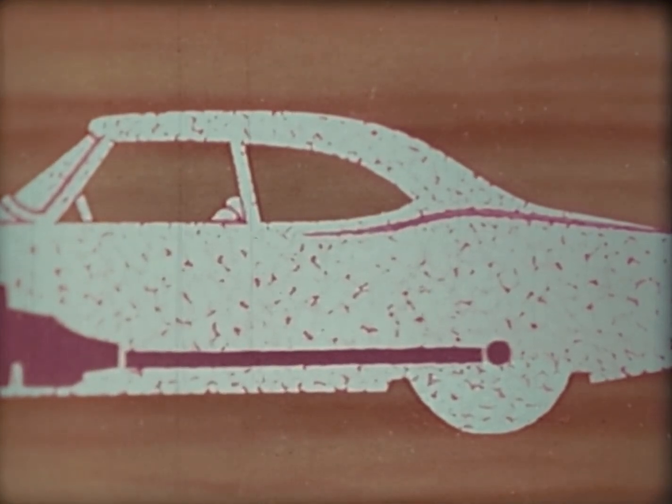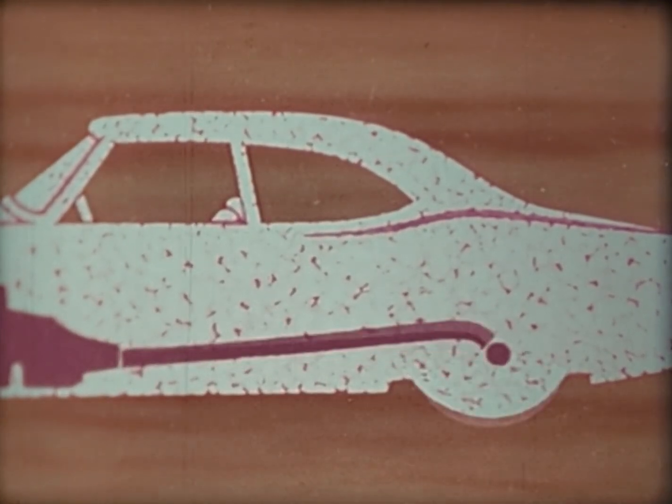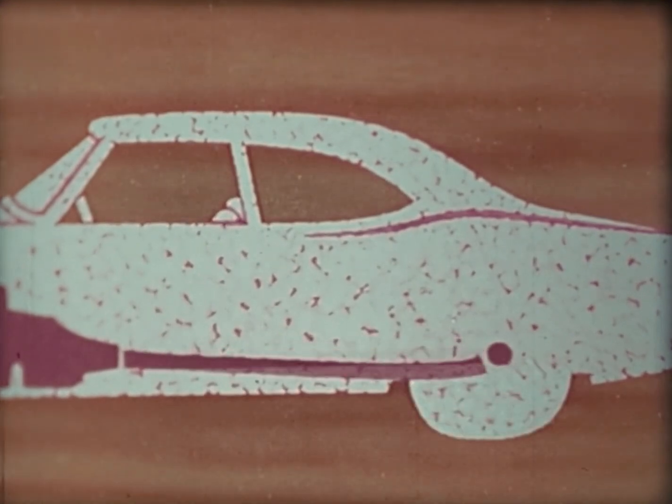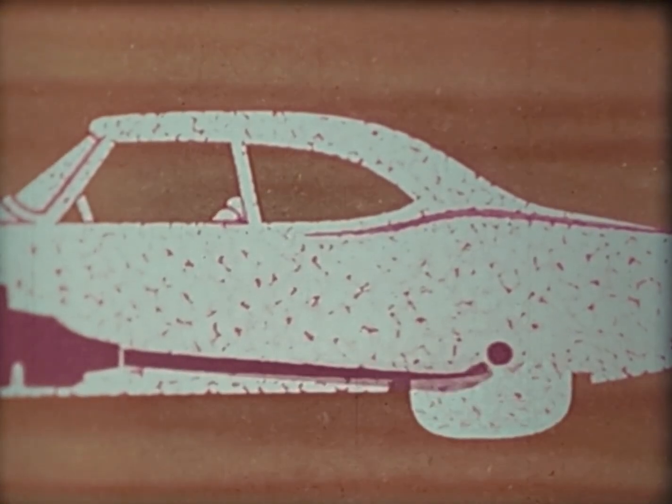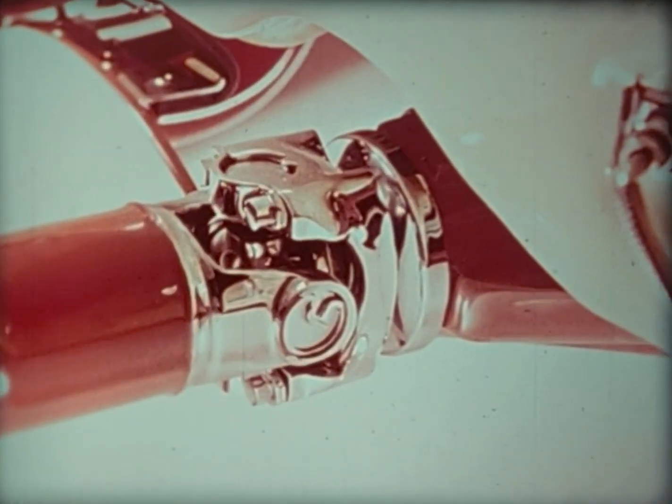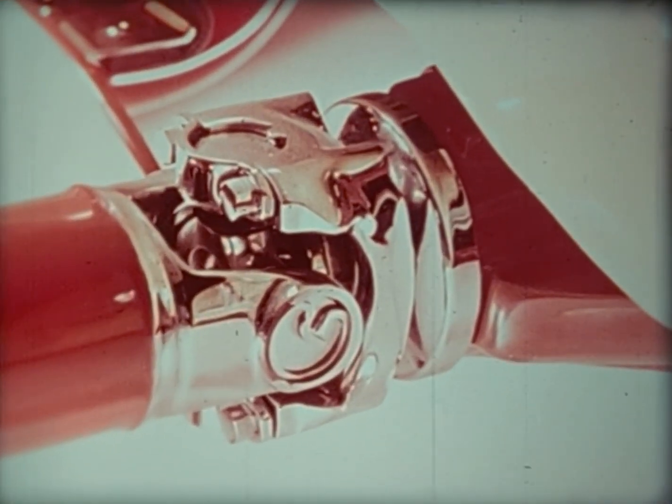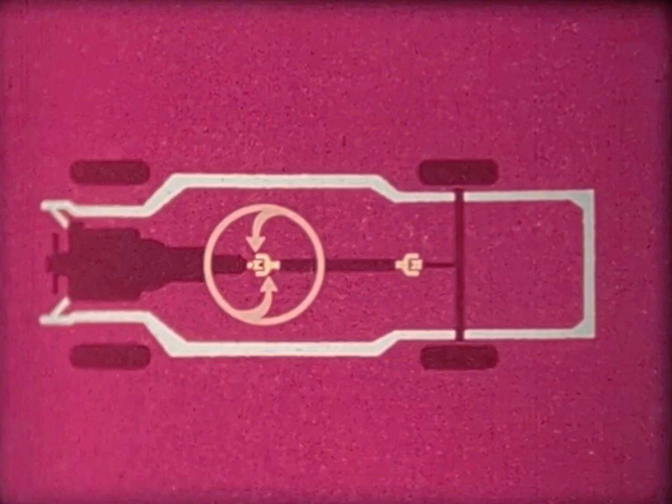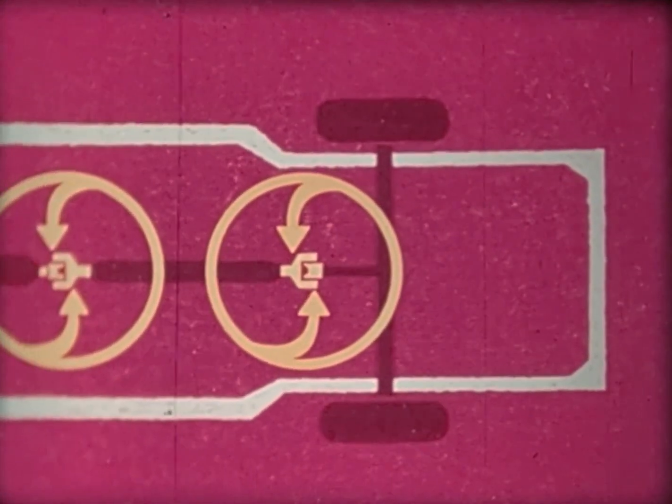But with springs, as the car goes over bumps, the wheels move up and down with relation to the frame, and the shaft would be bent. The problem is solved by the universal joint. It may be installed at the front or at both ends of the shaft.